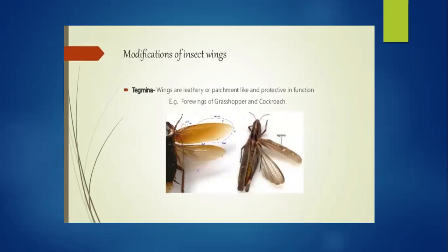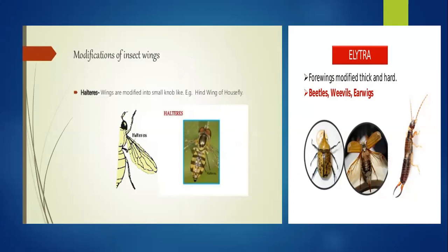The wings of certain insects such as grasshoppers and cockroaches — especially the forewings — are leathery or parchment-like and serve a protective function. Such forewings are known as tegmina, especially seen in grasshoppers and cockroaches.